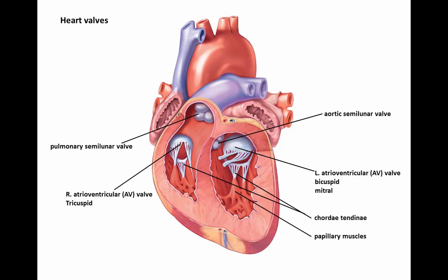The right atrioventricular valve, or right AV valve, is nicknamed the tricuspid due to structurally being made up of three flaps or cusps. The left atrioventricular valve, or left AV valve, is nicknamed the bicuspid due to structurally being made up of two flaps or cusps.